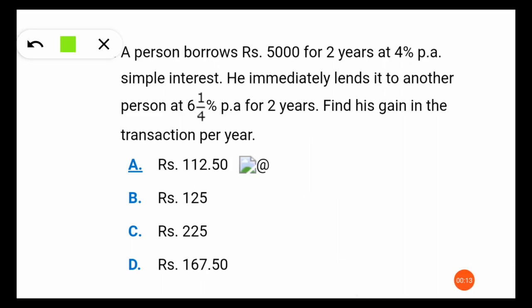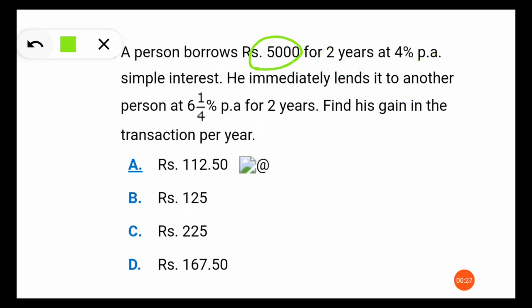A person borrows rupees 5000 for two years at a rate of interest of 4 percent. He immediately lends the same money to another person at 6 and 1/4 percent for two years. Find his gain in the transaction per year. He has borrowed 5000 rupees, lent it at a higher rate of 6 and 1/4 percent for two years.